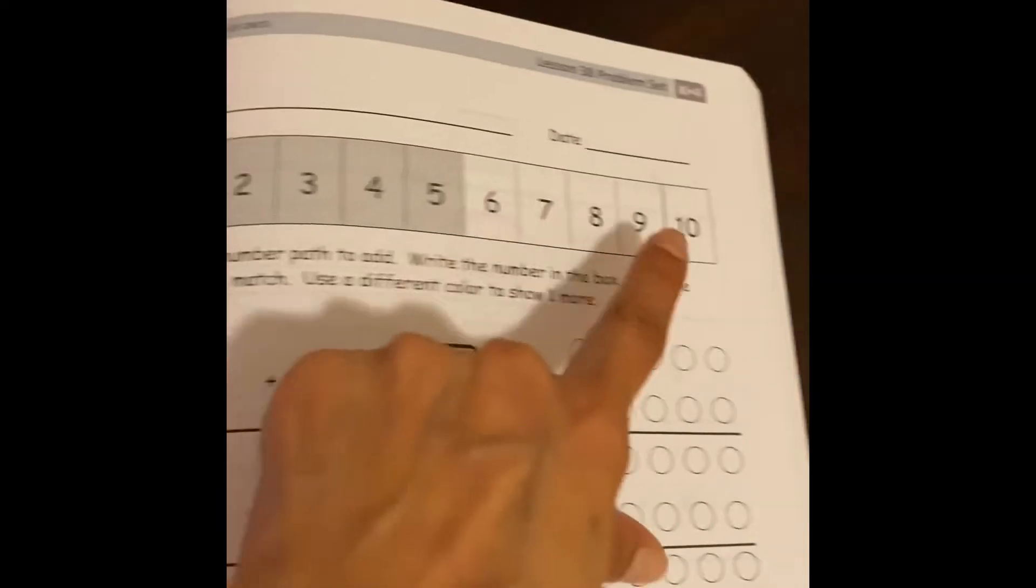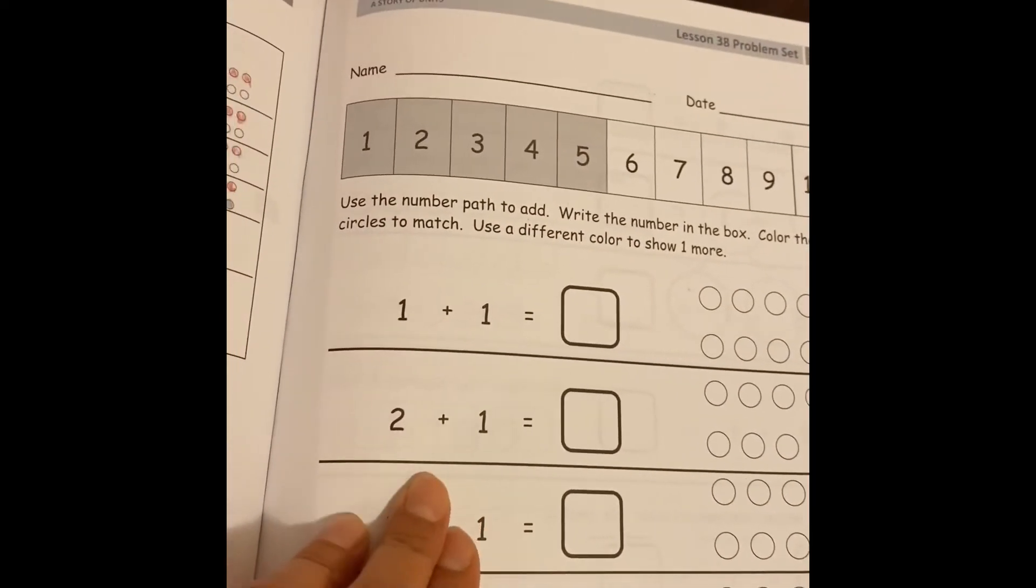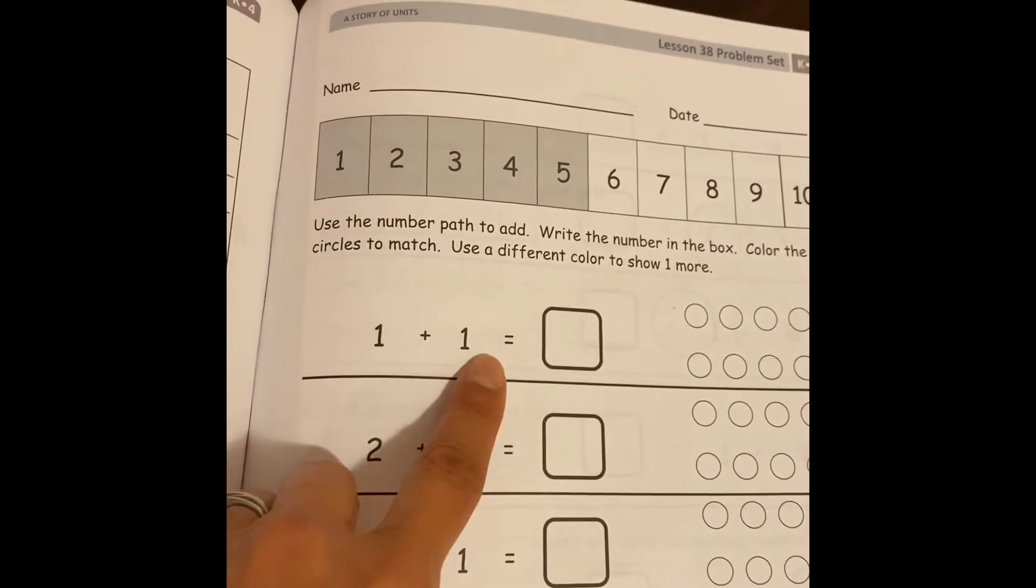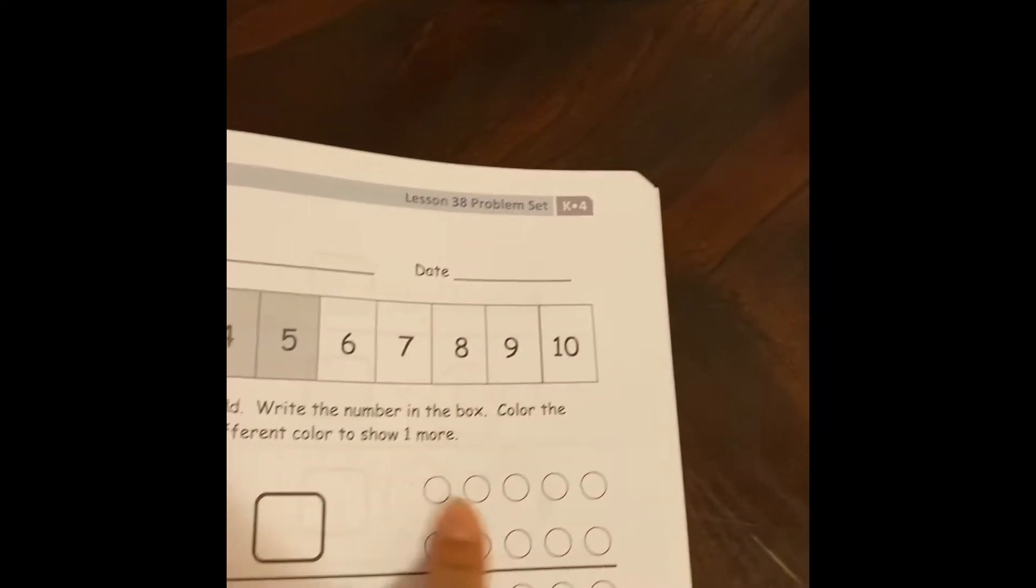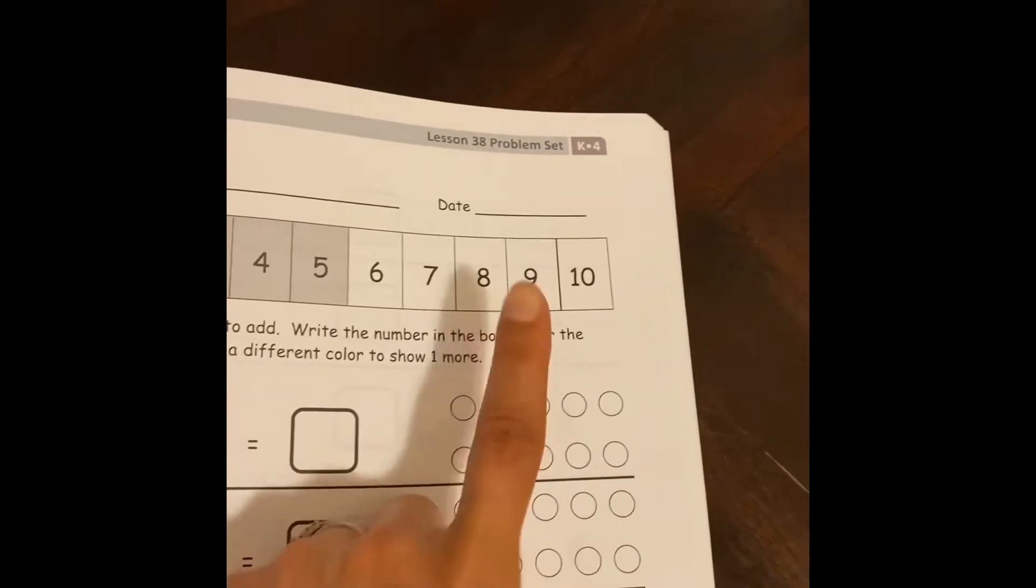We're going to be working with a number path. We're going to be working with one more, completing the number sentence, and using it in a five, depicting it in a five group way.